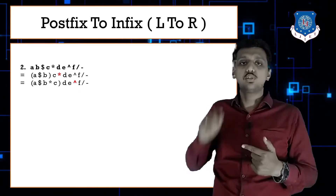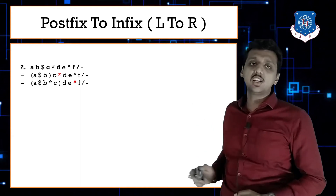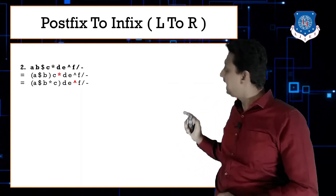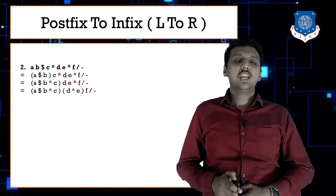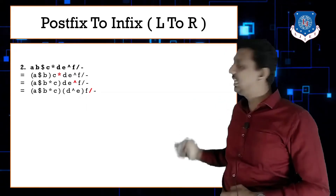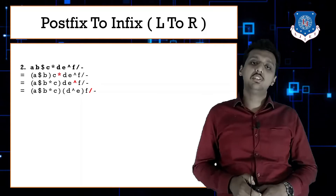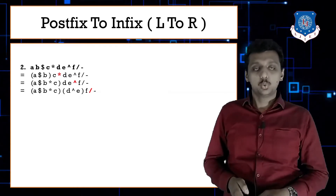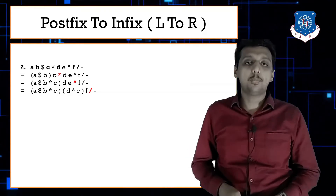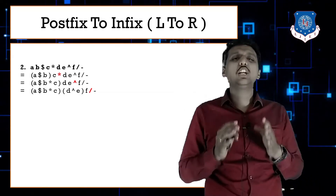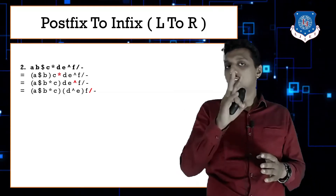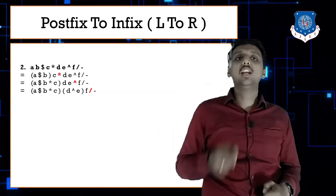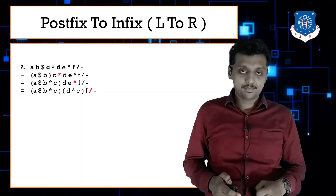This is postfix to infix — go left to right. Next operator is '^' (caret); bring it in between d and e to get d^e. Then going left to right we find division. Check carefully: division's previous two operands are (d^e) and f, so put division between them: (d^e)/f.